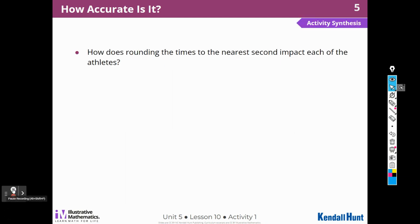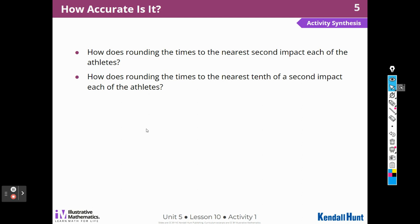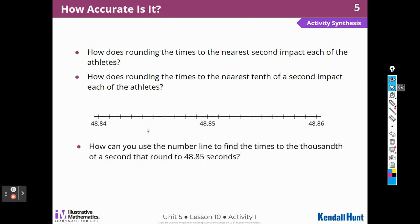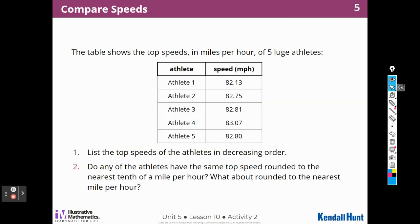How does rounding the times to the nearest second impact each of the athletes? It makes all of the times greater and impossible to distinguish. It impacts the fastest athletes the most, as their times are shifted up the most. How does rounding to the nearest tenth of a second impact each of the athletes? It makes the times of the first, third, and fourth athletes faster, and the times of the second and fifth athletes slower. It makes the second athlete tie for second place instead of winning second place. How can you use the number line to find times to the thousandth of a second that round to 48.85 seconds? I can label the tick marks and take the ones closest to 48.85, and the one halfway between 48.84 and 48.85.